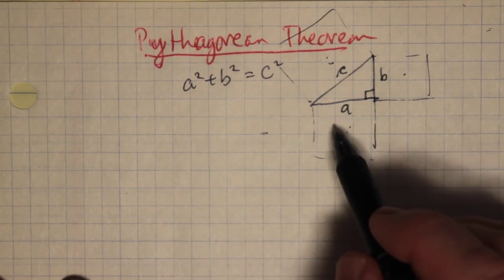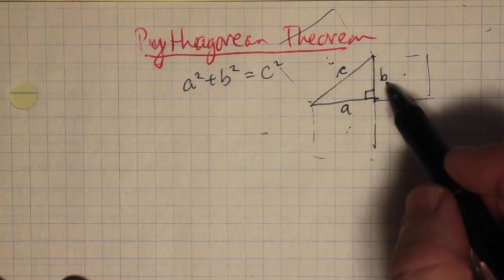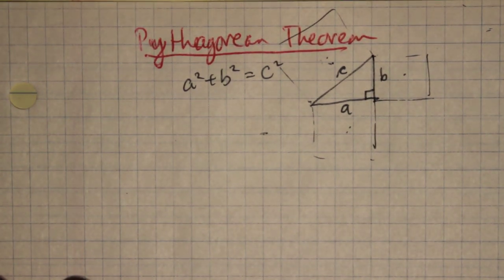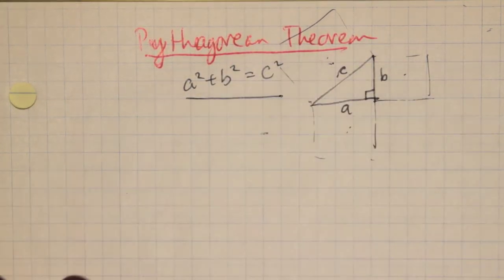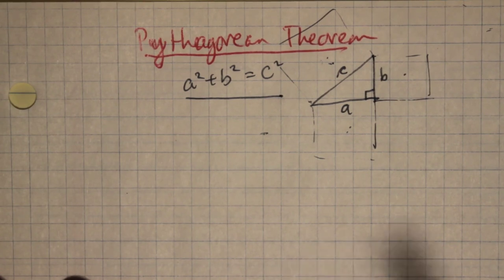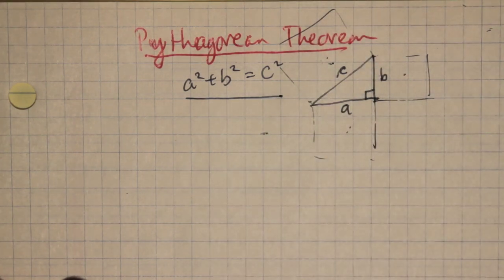So if you have an A by A square and you add it to a B by B square, you get the C by C square. That's the Pythagorean theorem, but there's something related to it, which comes from our good friend the unit circle, which I never seem to get enough of.